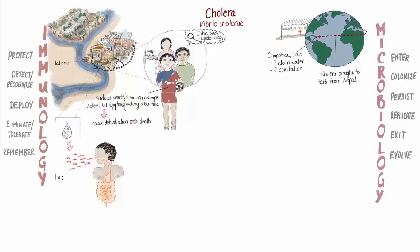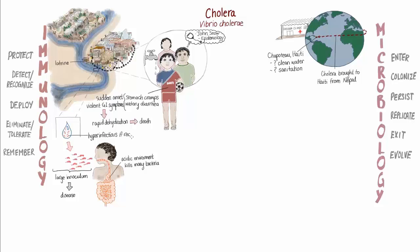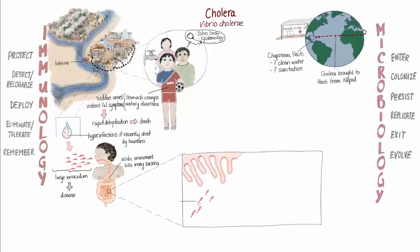In order to result in disease, a relatively large number of the comma-shaped Vibrio cholerae bacteria need to be ingested because most of them are killed in the acidic environment of the stomach. Vibrio cholerae that have recently been shed by another human are hyperinfectious, meaning they're better able to survive passage through the stomach. Once inside the small intestine, the bacterium uses its flagellum as a propeller, and guided by chemotaxis, it swims toward the surface of the intestine and avoids being cleared by peristalsis.